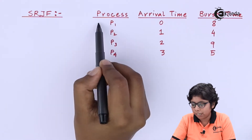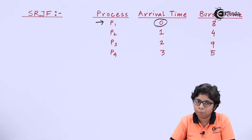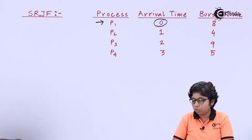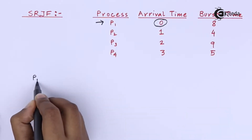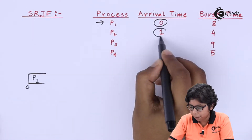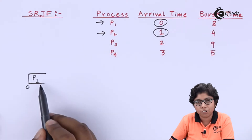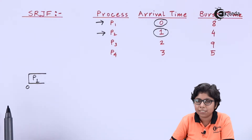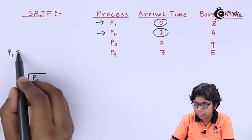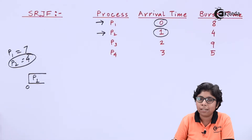P1 arrives first at 0ms, so we allocate the CPU to it without comparing other processes. At 1ms, P2 arrives. The remaining time of P1 is 8 minus 1, which is 7ms, and P2 has a burst time of 4ms. Since P2 is shorter, we allocate P2 at 1ms.